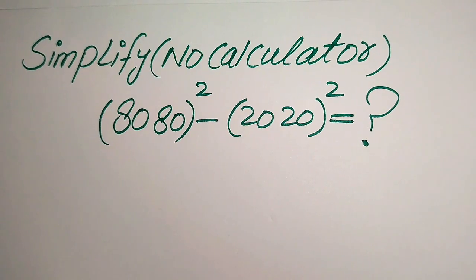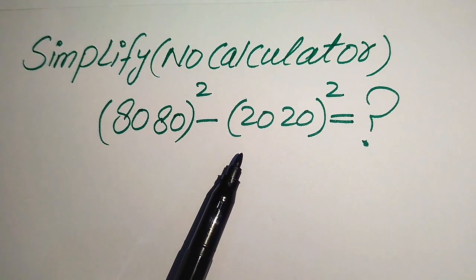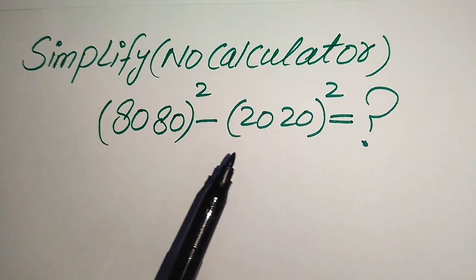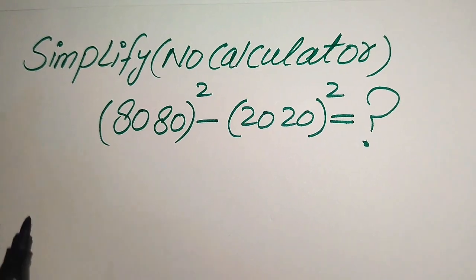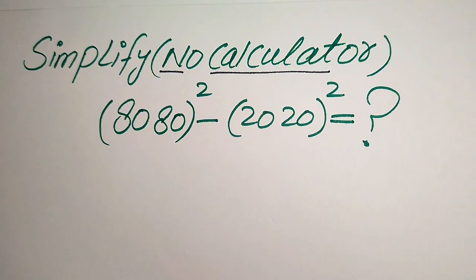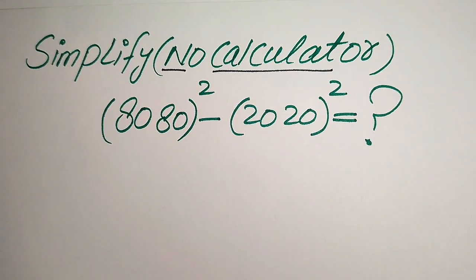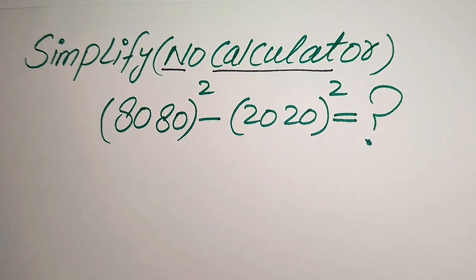Hello everyone. How to simplify this nice algebraic expression: 8080 whole square minus 2020 whole square. We will write this algebraic expression into its lowest form. Note that a calculator is not allowed in this problem, meaning we need to show all working on paper. To solve this, we can use some exponent laws as well as some algebraic formulas.